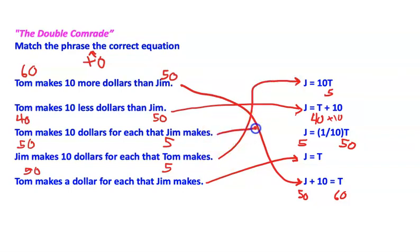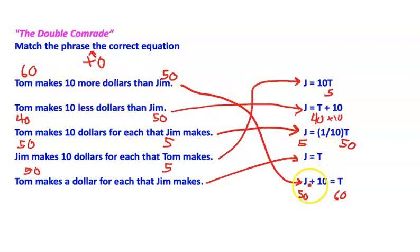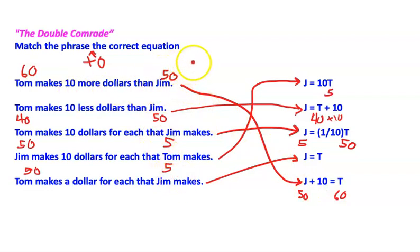Again, if the wording gets confusing — and sometimes it can — you see the plus, you see the minus, it's not always as easy as it seems. But if you throw in some dollar amounts and use a little mental math, everything will be okay. All right friends, that was the double comrade.